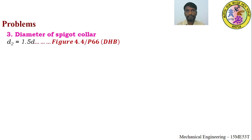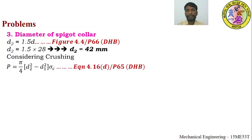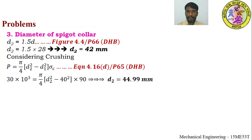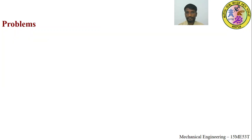Point 3 — Diameter of spigot collar d2: From figure 4.4, d2 = 1.5 × d = 42 mm. Considering crushing (equation 4.16d, page 65), d2 = 44.99 mm. Taking the maximum and referencing standard table 3.5a (page 57), d2 is adopted as 45 mm.